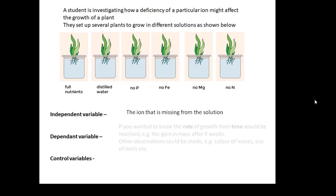The dependent variable, there's lots of different things you could measure. If you wanted to know the rate of growth, how quickly it's growing, then you'd certainly measure time. Time would be involved. For example, the gain in mass after four weeks. There's other things you could measure. You could look at the growth of the roots, the colour of the leaves, the size of the roots. There's lots of different dependent variables you could look at.